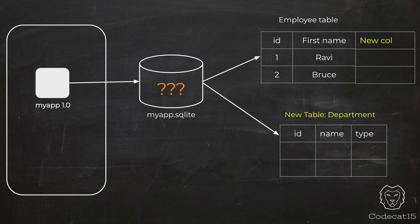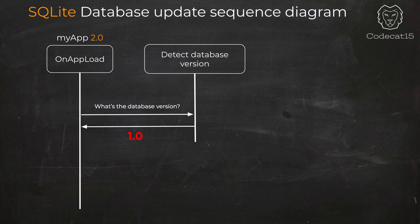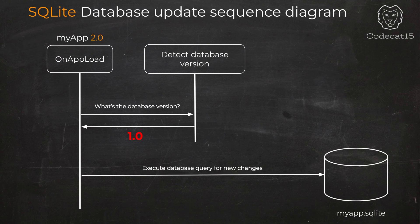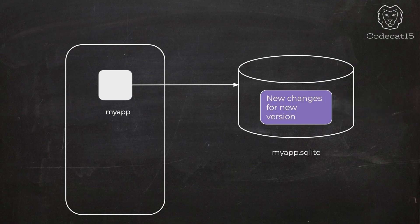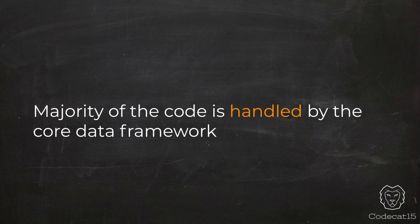Development ke waqt ye changes karna easy hai kyunki hamare paas control hota hai, toh hum manually ye queries execute karte hain. But jo application already App Store pe hai, uske database mein ye changes karne ke liye humein code likhna hoga. Agar main SQLite use kar raha hota, toh application ke load pe code likhta jo mujhe ye batata ki database ka version kaun sa hai, aur old version detect hone par jo naye changes karne hain main uska code execute karta. Yahan ye sab code isliye likhna pad raha kyunki jab main naya version release karunga, tab jo purana database hai user ke phone pe, usme ye saare naye changes reflect hone chahiye. Aur bina query execute kiye hum database mein koi changes nahi kar sakte. Aur agar aapne aisa nahi kiya toh naye update mein jab user naye features use karne ka try karega, tab application crash ho sakta hai. Toh ab mujhe naye features ke saath-saath user ke database ko update karne ka code bhi likhna padega — yaane double mehnat, double coding aur double testing.